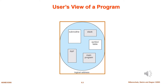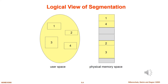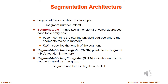Segmentation is a variable-sized partitioning scheme. In segmentation, secondary memory and main memory are divided into partitions of unequal size. The size of partitions depends on the length of modules. The partitions of secondary memory are called segments. In the logical view, on the left side you can see the user space with different parts of a program of different sizes, and on the right side the physical memory space where segments have been allocated memory.